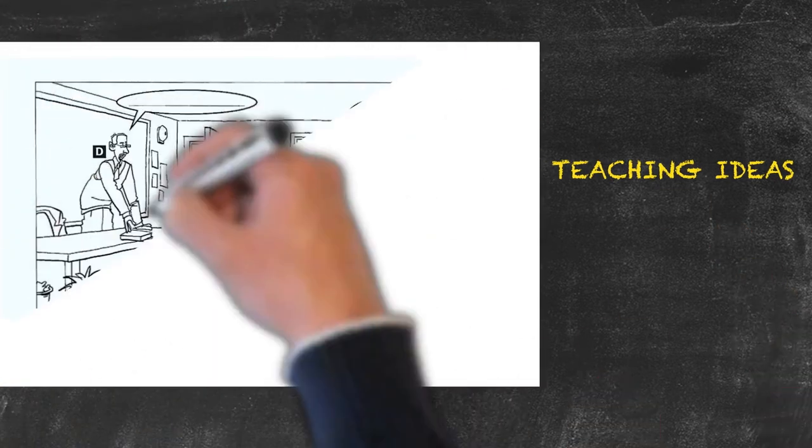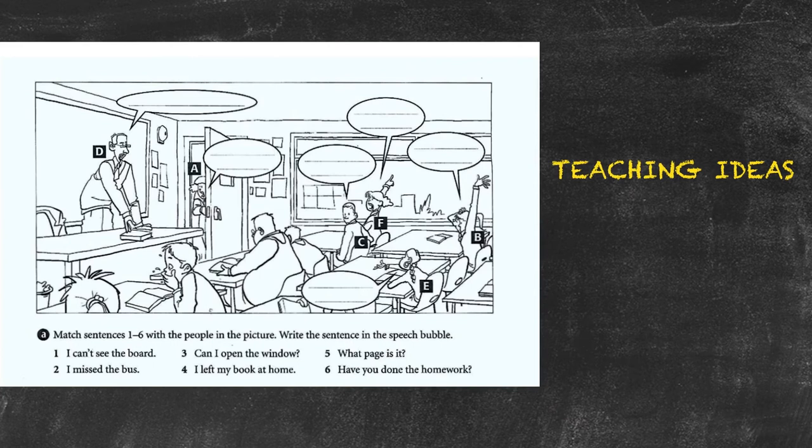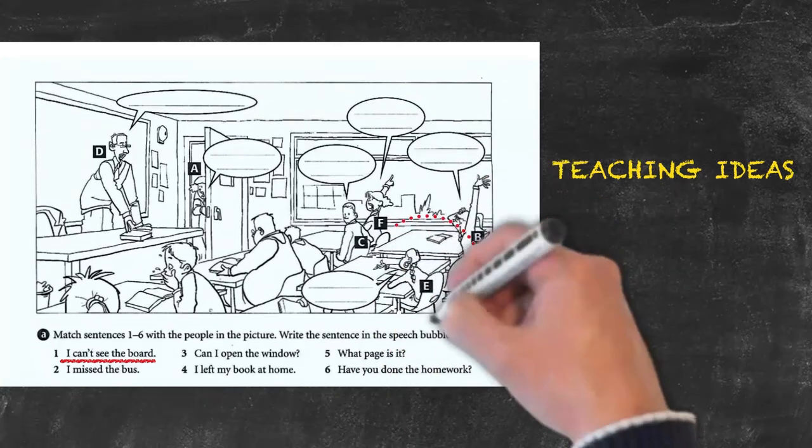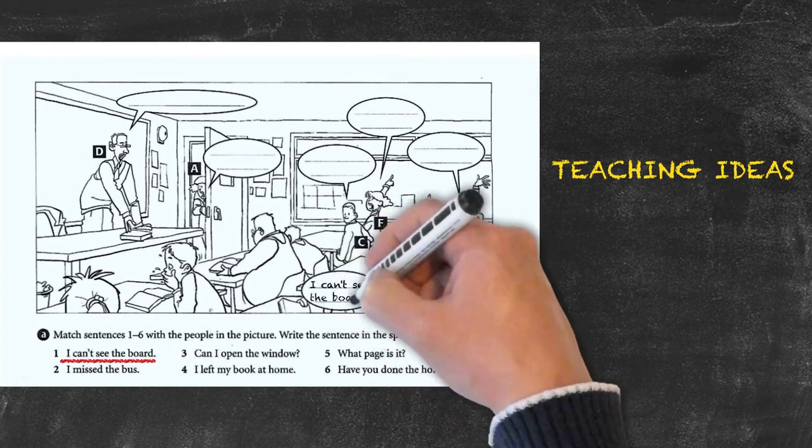Here's an additional teaching idea for reported speech. This time the activity will be done in two phases. The first phase will challenge the students to match a statement with a certain character in a picture. The students will see the statement I can't see the board and have to assign it to the most logical person probably being the short girl sitting behind the big man.